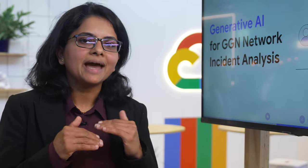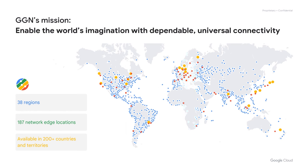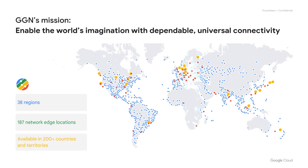This particular demo is a combination of networking, data analytics, and AI. We want to go through a quick glance of the scope of the use case. These are all the regions where Google global networks operate — 32 to 38 regions, 200 plus countries. So it's quite a huge thing.